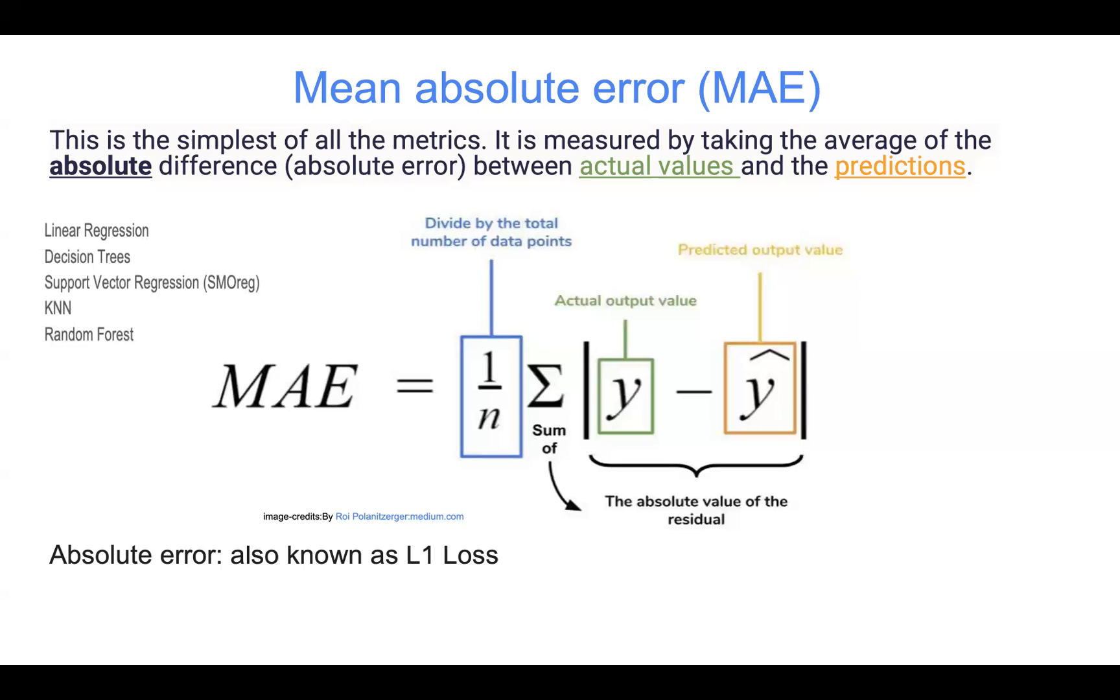Suppose we want to measure how good a regression model performs. In other words, how does our model approximate the relationship between y and x variables? To do this, we use a set of evaluation metrics, and the first one here is called the mean absolute error.